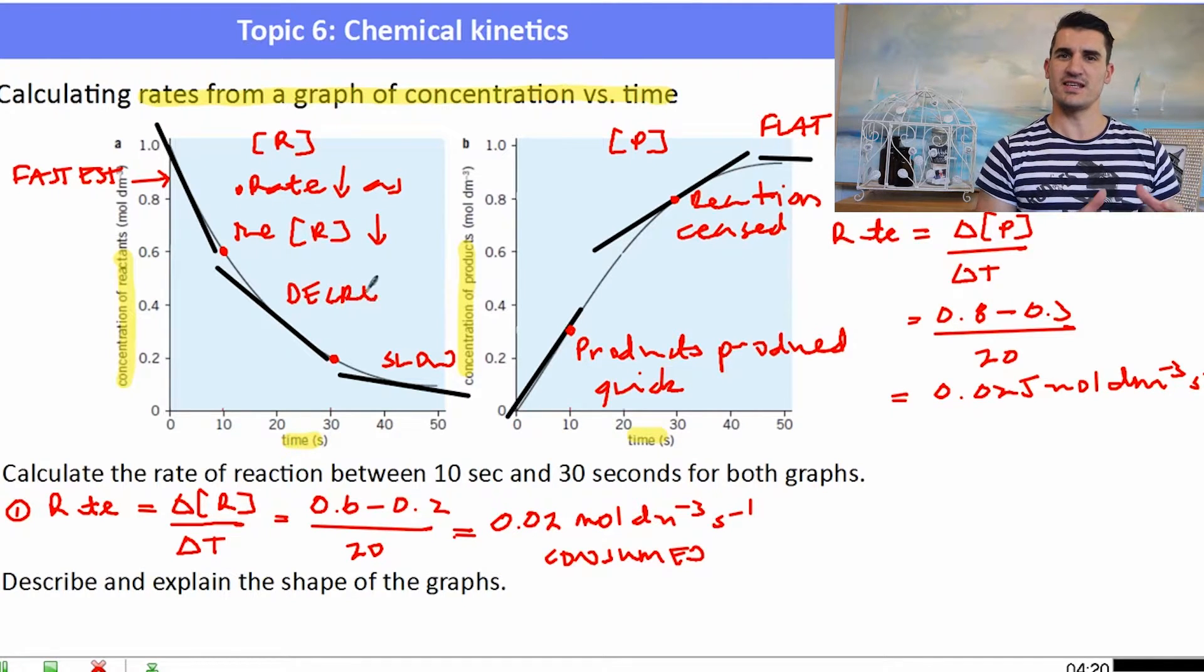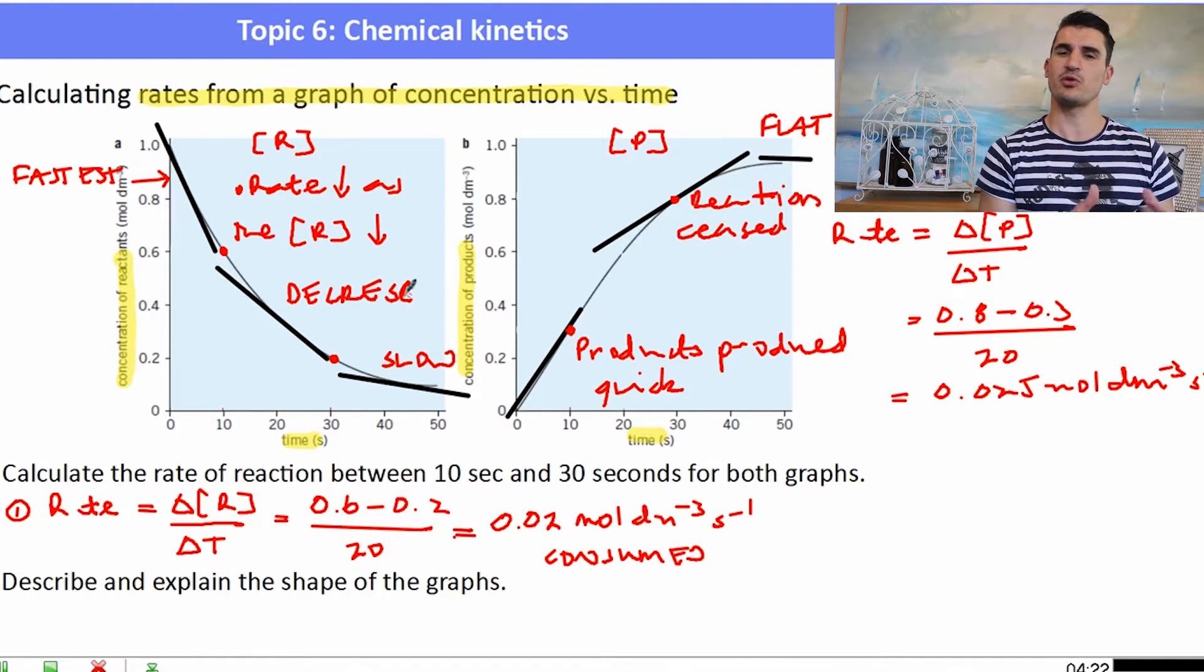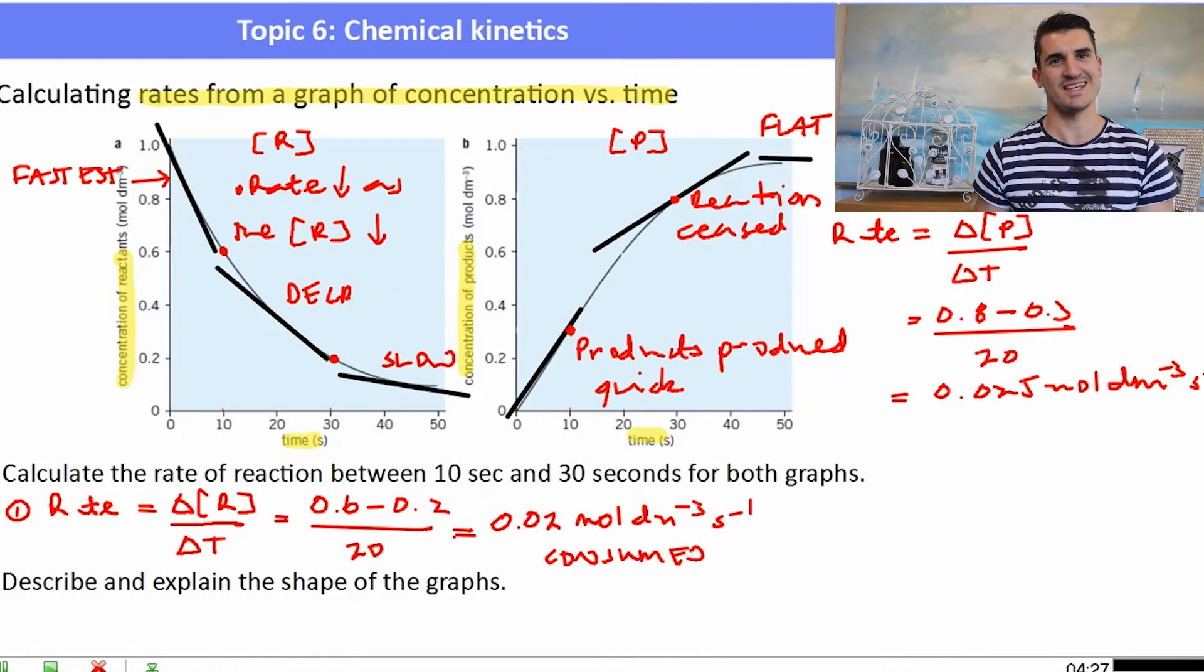We know that the graph on the left is the graph for the reactants, because it's decreasing, and the graph on the right must be from the products, because it's increasing.